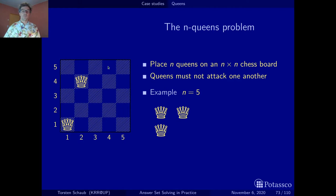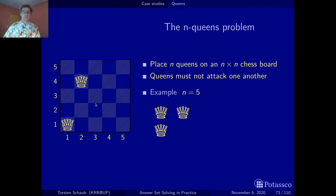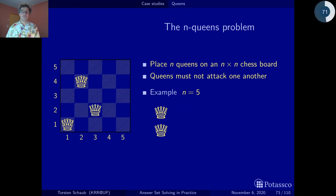Now, what positions are left for the third queen? We could put it here, but there's a diagonal attack. Same here — diagonal attack from there, and from there, a double attack. But this position looks pretty good; it's the same position we had before. So let's put the queen there — again the only possibility left.